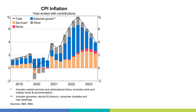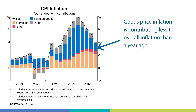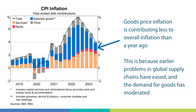Let's take a look at how different factors have contributed to headline inflation recently. Looking first at goods, the blue bars show the contribution of selected goods to inflation — things like groceries, alcohol and tobacco, consumer durables and new dwellings. The blue bars have become smaller over the past year, meaning these goods are contributing less to overall inflation than before. There are two key reasons: earlier problems in global supply chains have eased, reducing pressure on firms' costs and the prices they charge consumers, and demand for goods has also moderated.